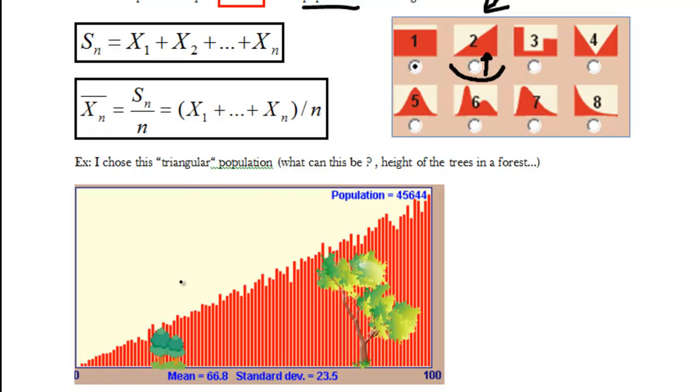And you might ask me what is actually this triangular population standing for and I can say for instance trees in the forest. So population of trees in a forest amounts to 45,644 trees with mean height of 66.8 meters and standard deviation of 23.5.